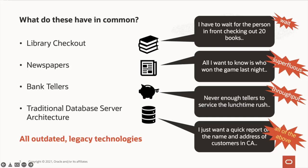Consider another somewhat legacy technology: you might be looking for one piece of information. Take a newspaper — on the back page of most newspapers is the sports report. If that's all you want, you've gone and picked up a newspaper that has all this superfluous information. You're not interested in it to satisfy your query around who won the tennis or cricket last night. So you tend to get all this information delivered to you that you're not expecting. This is how traditional database platforms also work.